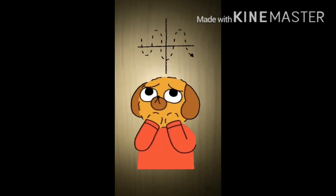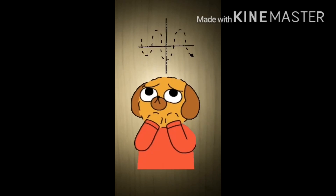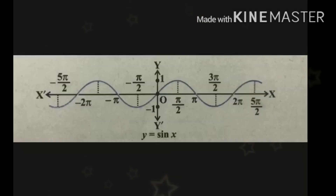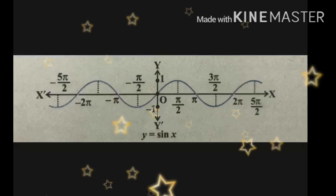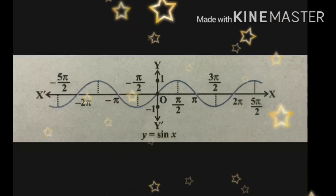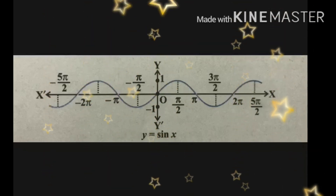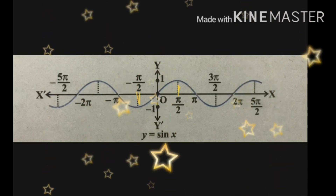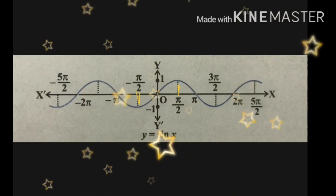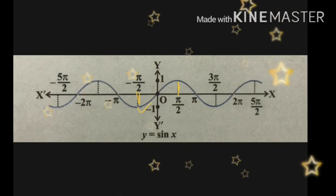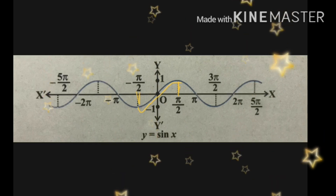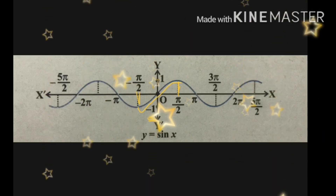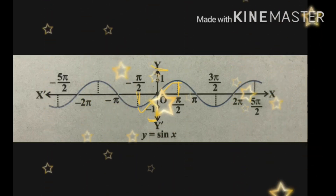Now let's take an example of sin x. In the graph of sin x we can see that its domain is from minus pi by 2 to pi by 2. It is because in this domain it does not repeat any value and it also covers its range, that is from minus 1 to 1.